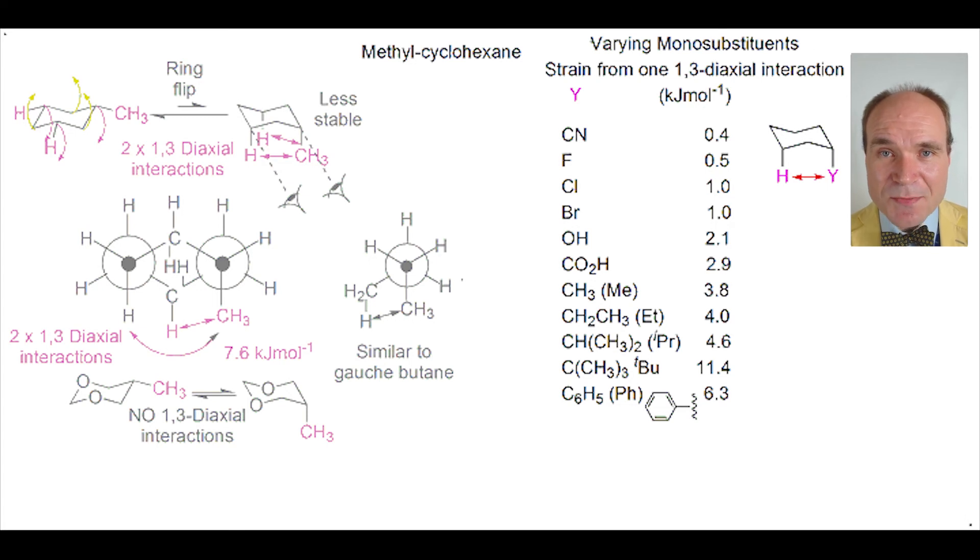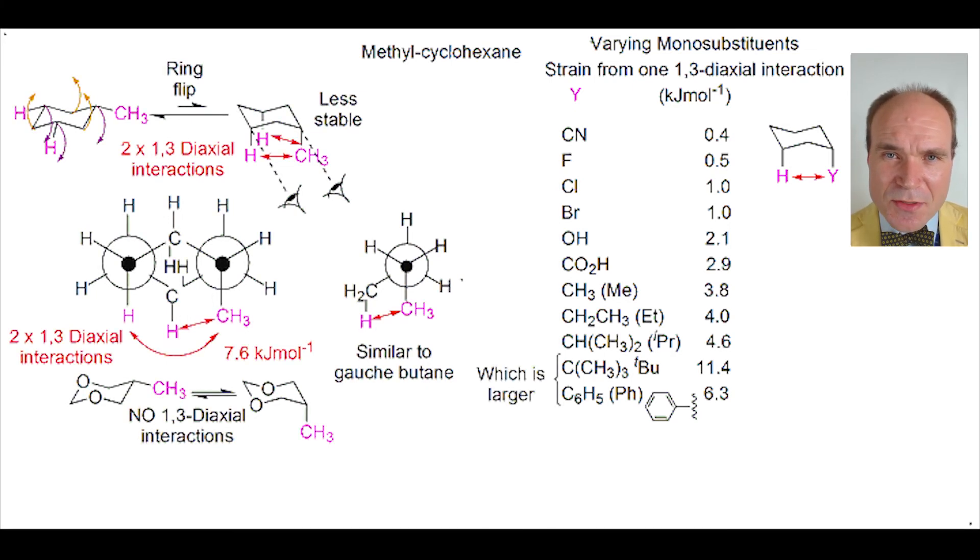It's interesting to compare the t-butyl group, or tert-butyl group, with the phenyl group. The phenyl group has more atoms in it. And if you view it from one direction, as we're seeing now, it seems larger than the tert-butyl group. But if we are to rotate it by just 90 degrees, it seems very small now.